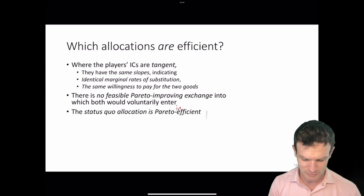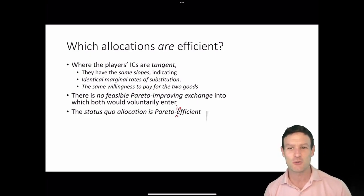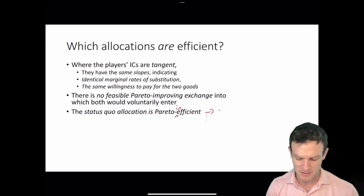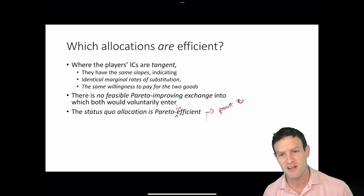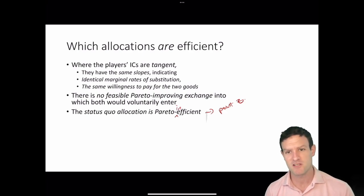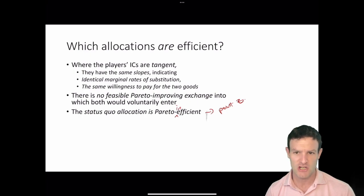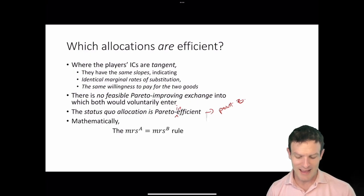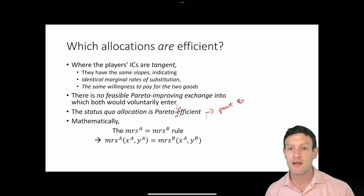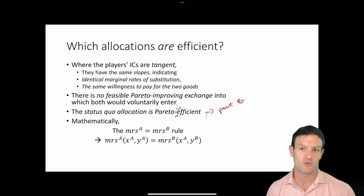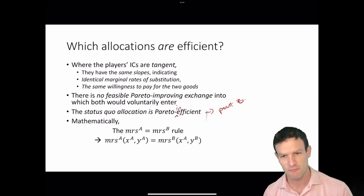The status quo allocation is in fact Pareto inefficient when we think about point Z. Point Z is Pareto inefficient because at that point the indifference curves were intersecting each other. When the indifference curves intersect, that is not a Pareto efficient allocation — we arrive at a Pareto efficient allocation when the marginal rate of substitution of A equals the marginal rate of substitution of B.